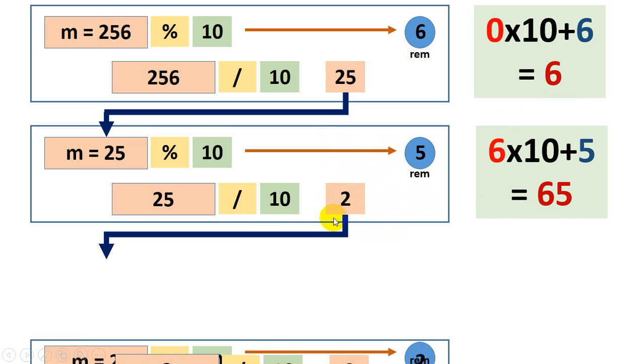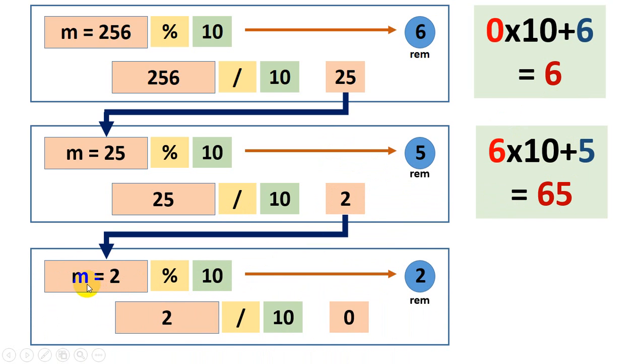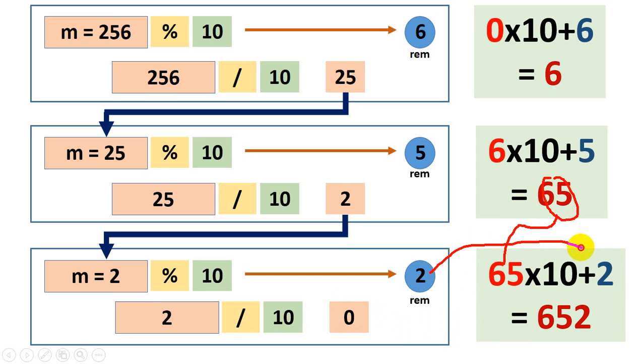This is the last process. So m is equal to 2 and modulo 10. So 2 modulo 10 we get 2 and again we divide 2 with 10 so that becomes 0. We can stop here. So now reverse value is 65 previously. Now 65 into 10 plus this remainder 2 and that becomes 652.